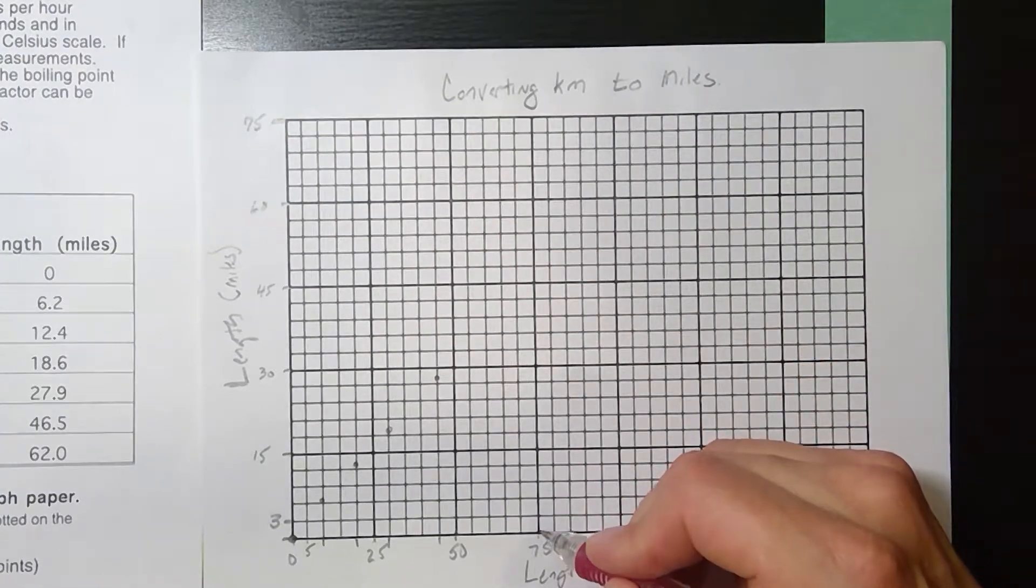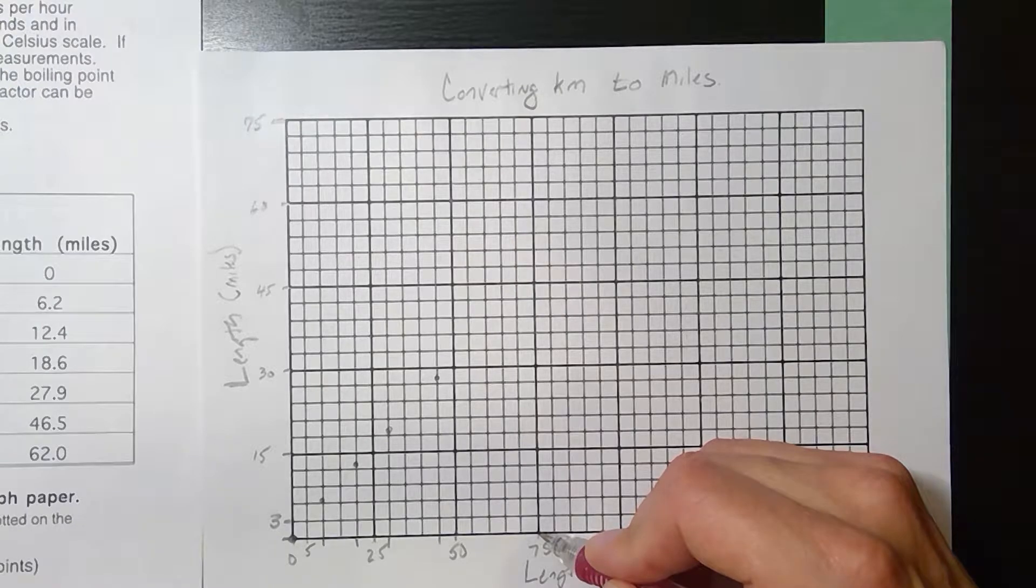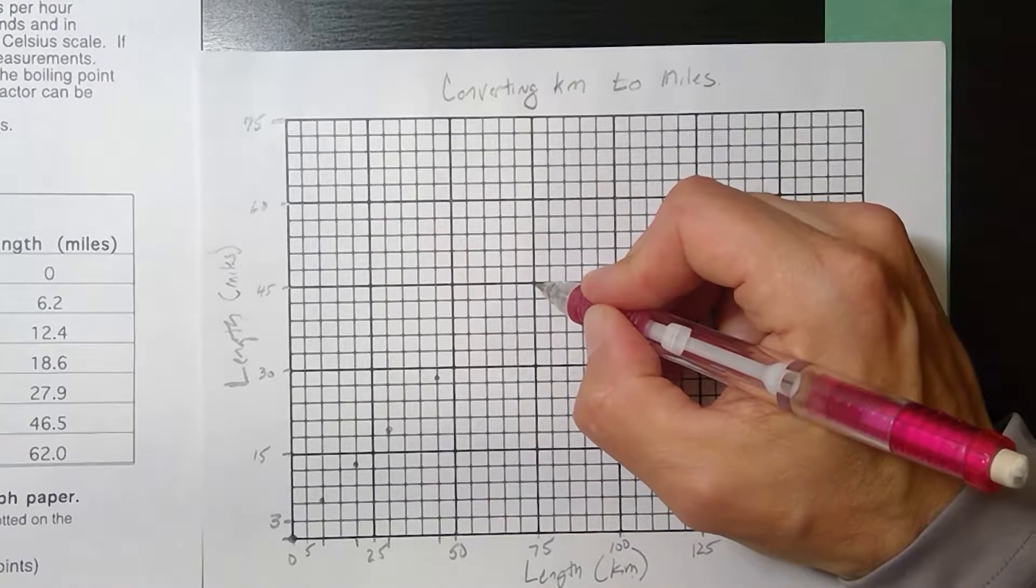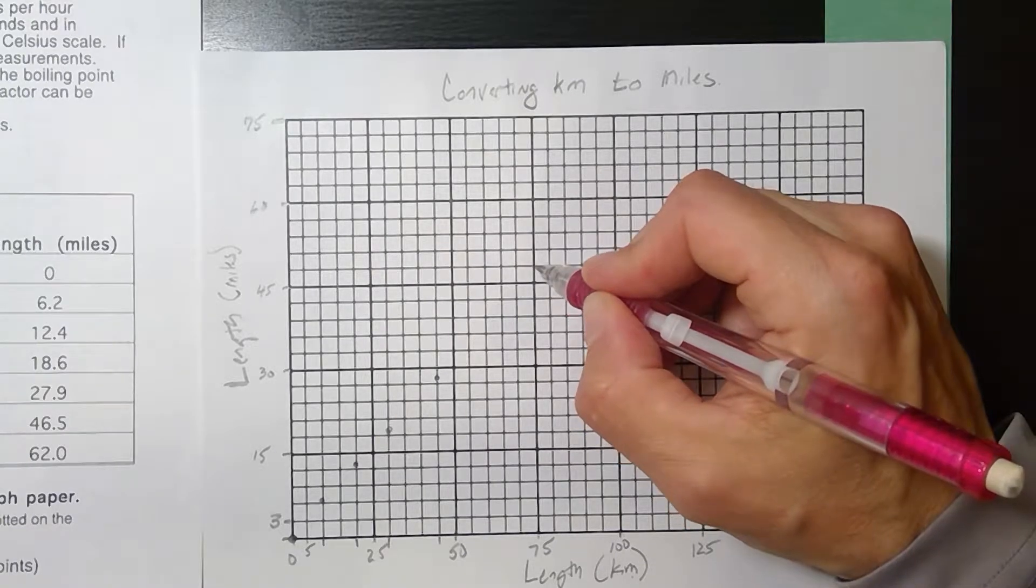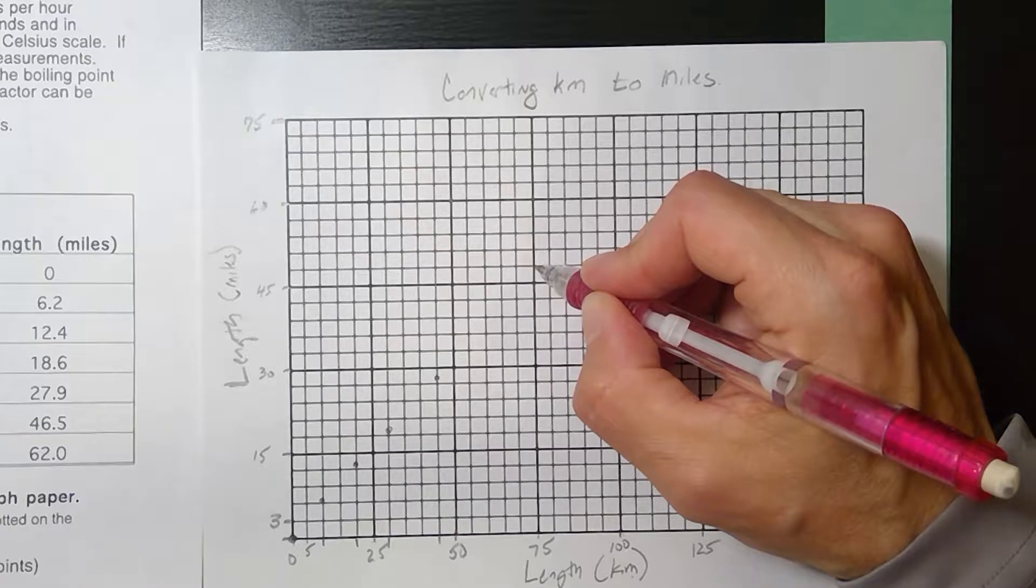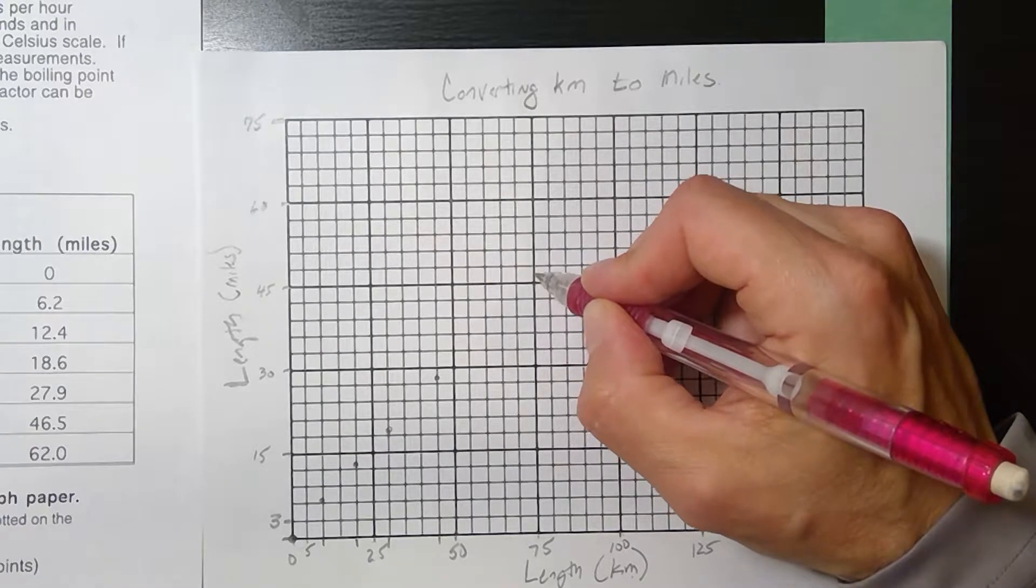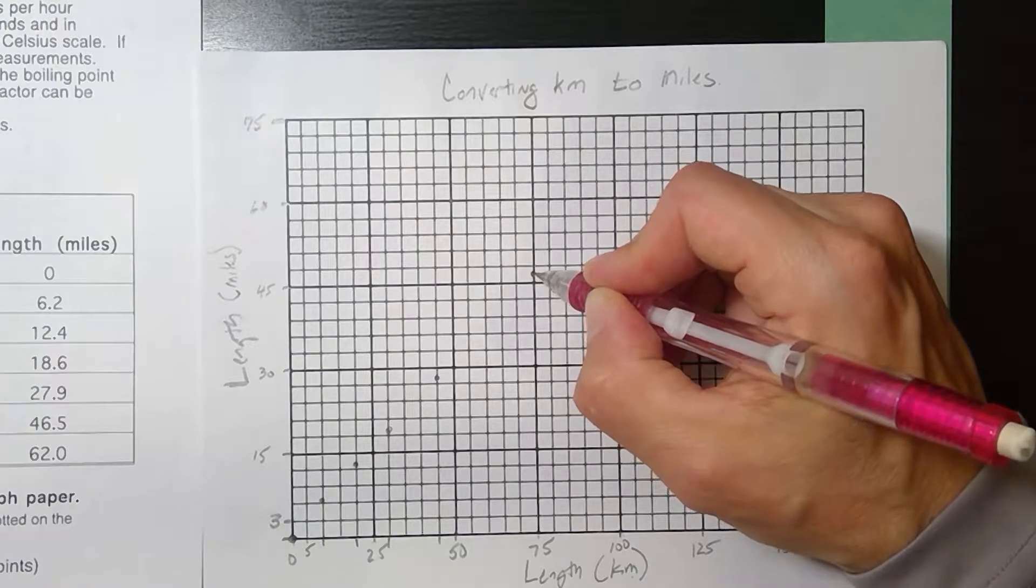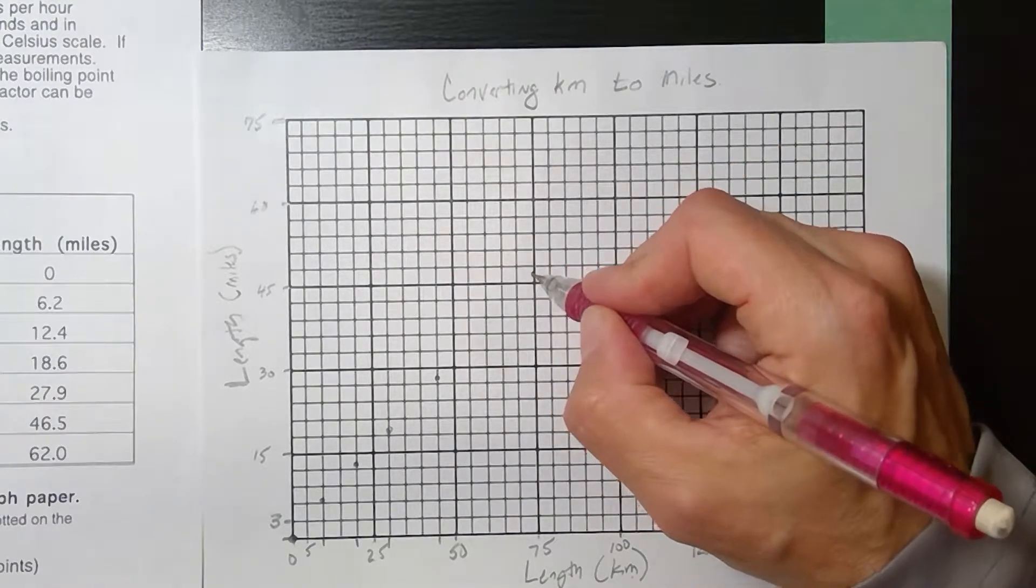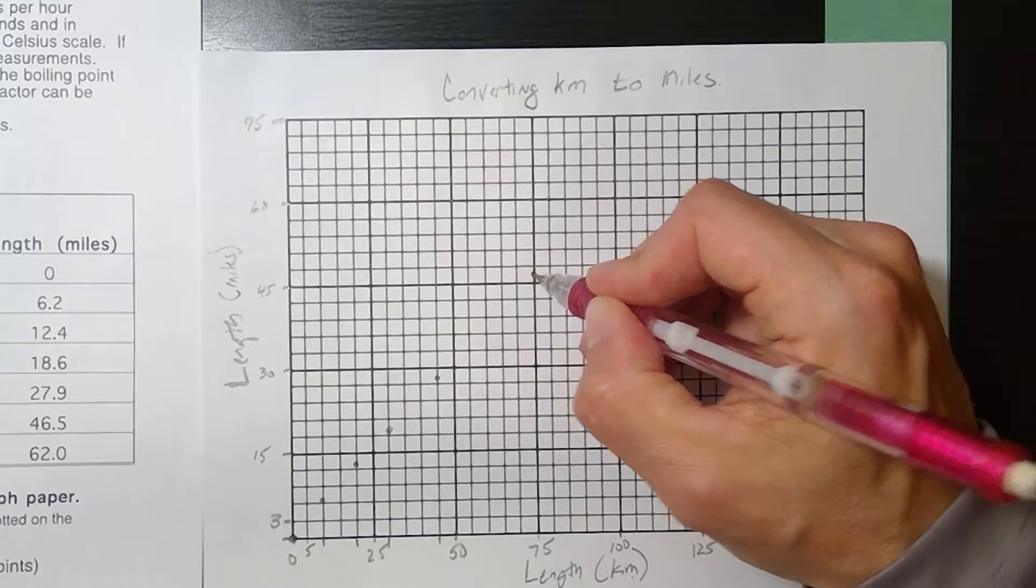Our next point is 75 and 46.5. 45 is here. So 46.5 is going to be halfway between 45 and 48. So I'm going to put this point dead smack in the middle of those two boxes. That would be 46.5.